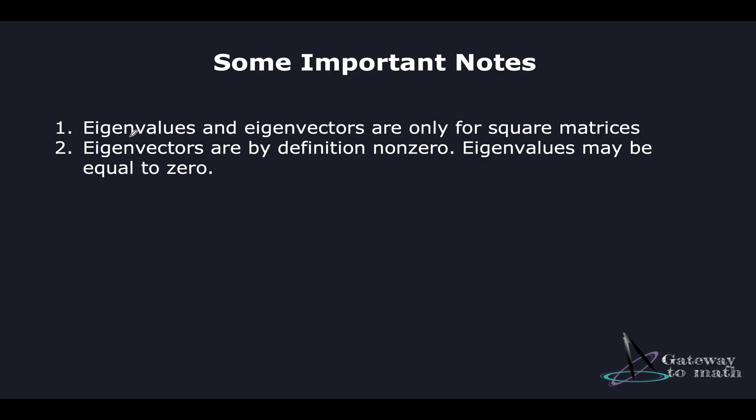Eigenvalues and eigenvectors are only for square matrices. And we will discuss why this case holds true. And then eigenvectors are by definition non-zero. Eigenvalues may be equal to zero. It's pretty obvious. If it's a vector, it has to have some values. It just cannot be a zero vector. It is supposed to have some set of values. But eigenvalue scalar factor lambda can be a zero value.